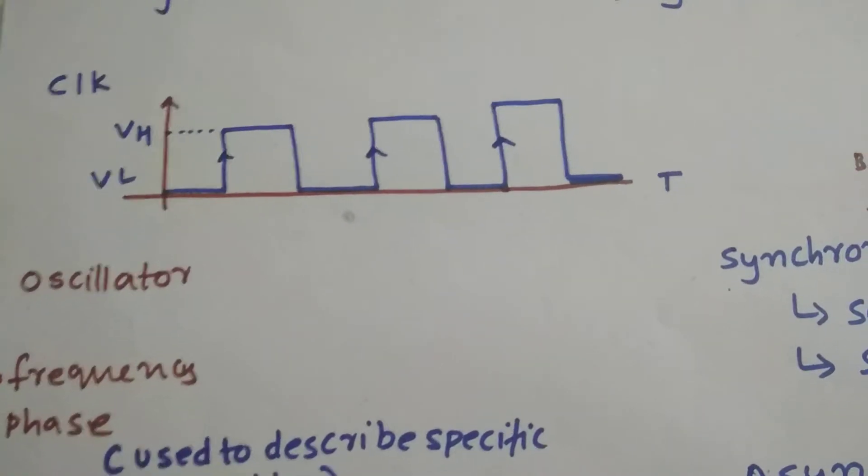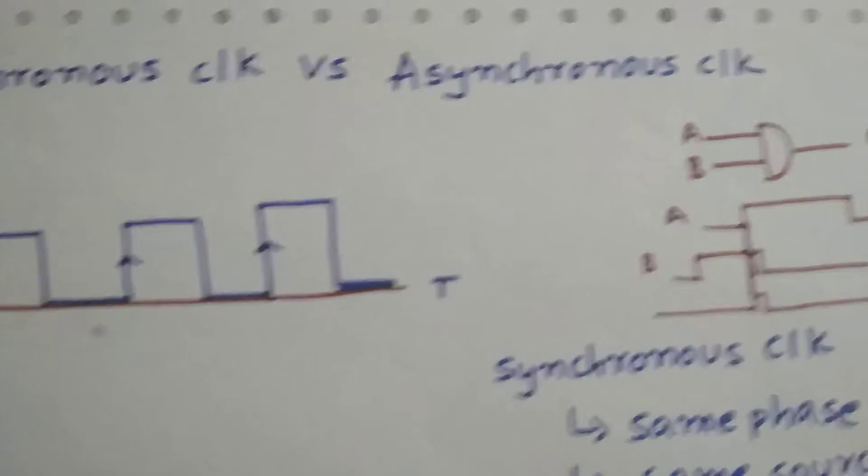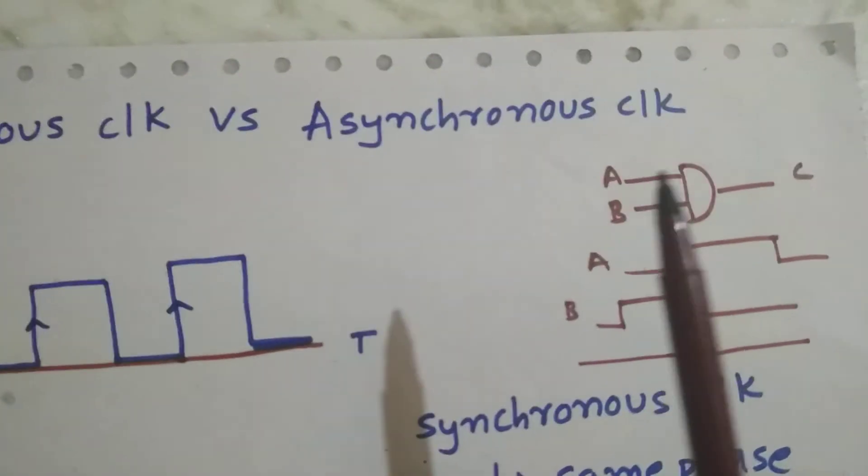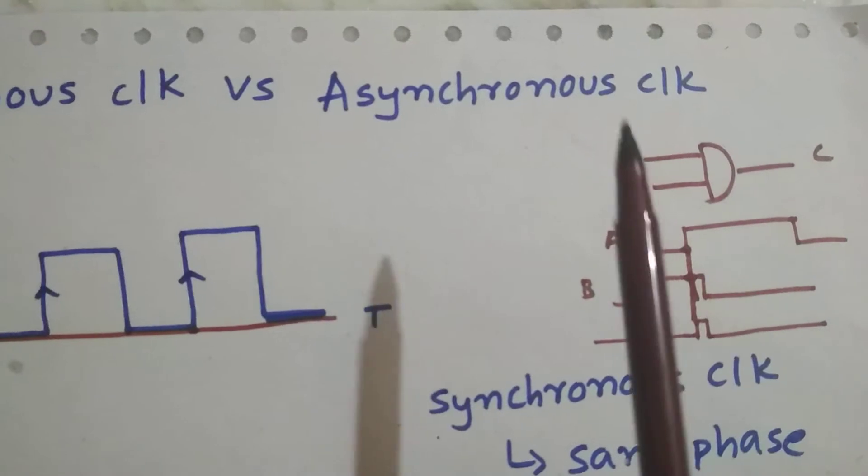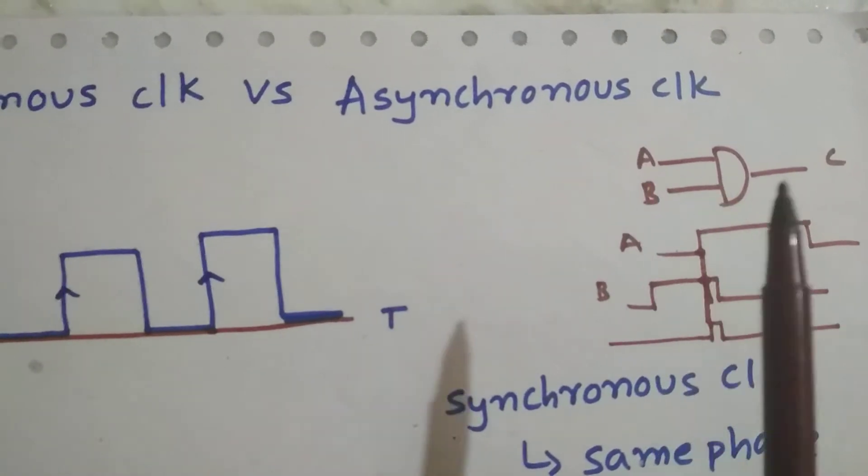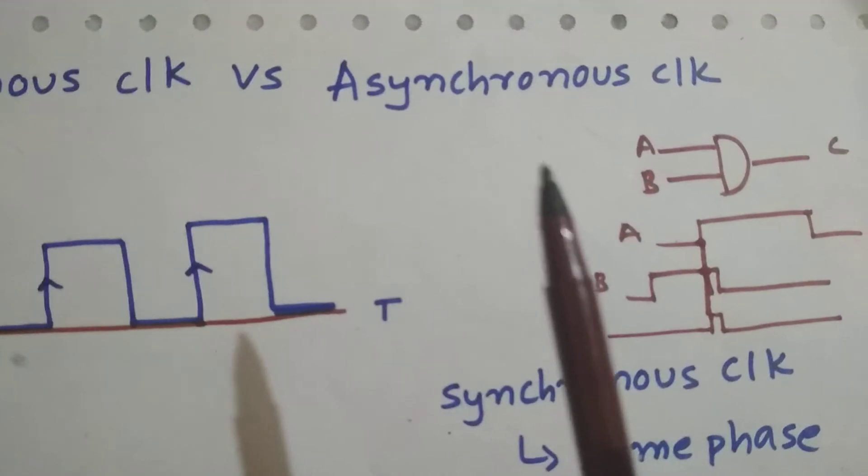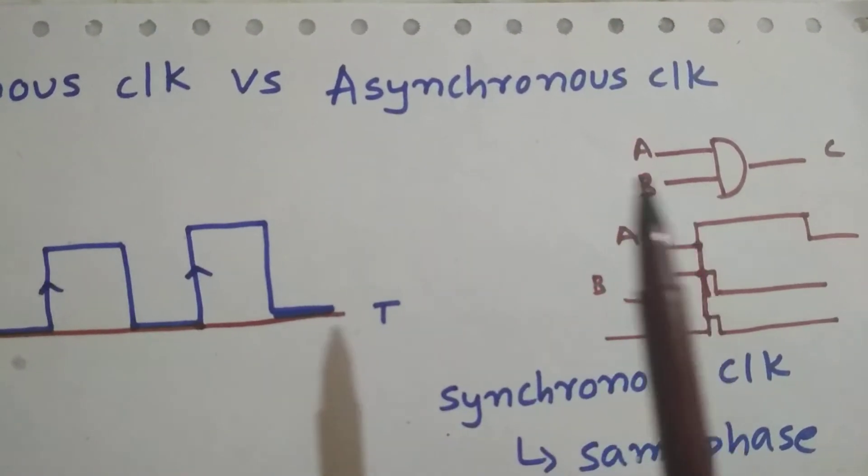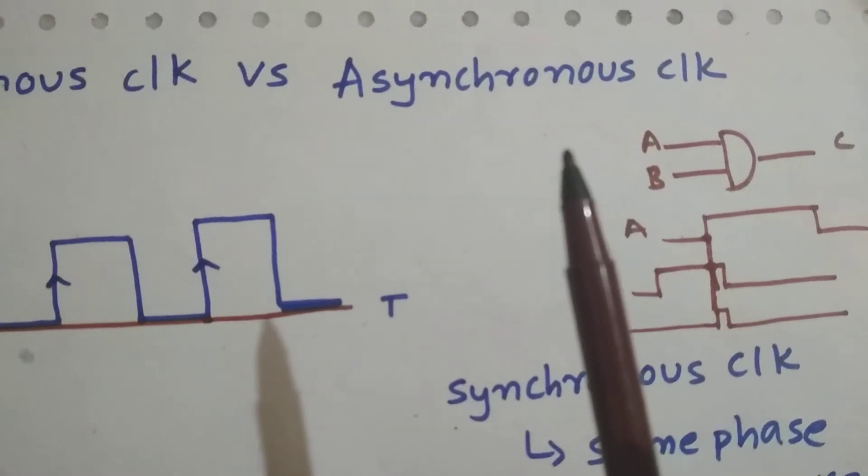So why are we using a clock in the design? We have a problem called a glitch. As you can see, A and B are inputs to an AND gate. These A and B are coming from various different gates and various flops. There are gates, and so there is a propagation delay in that gate.